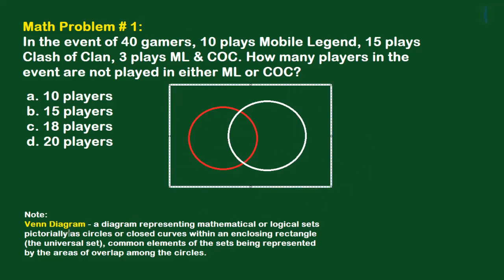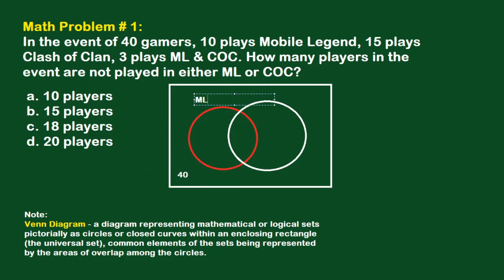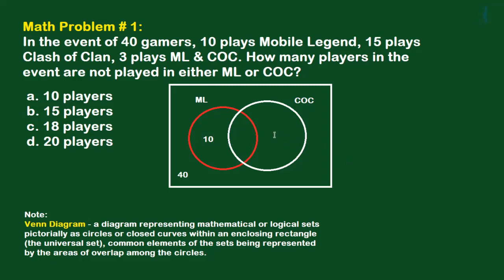As per the Venn diagram definition, let's draw a rectangular shape representing the universal set. We know the total number of players is 40. We label one circle ML and the other CoC. The 10 players go here for ML, and the 15 players go here for CoC. The question is: how many players are not playing either ML or CoC?